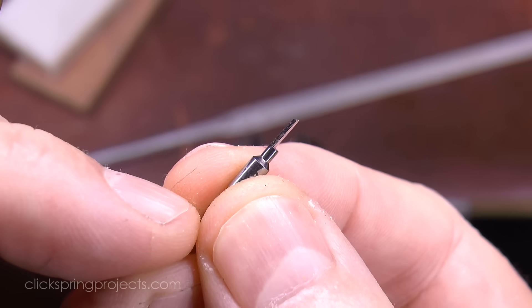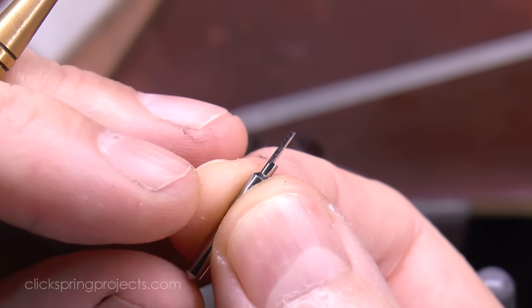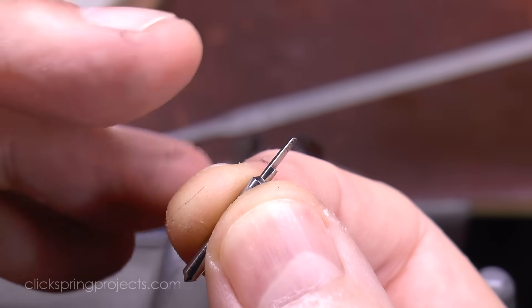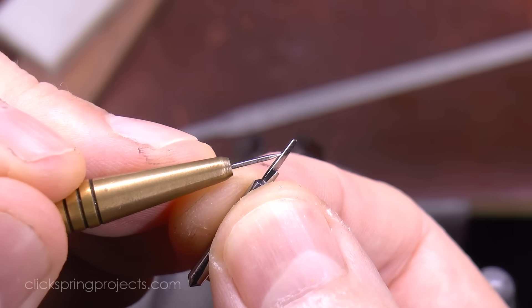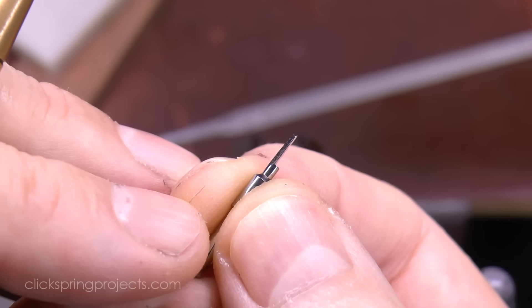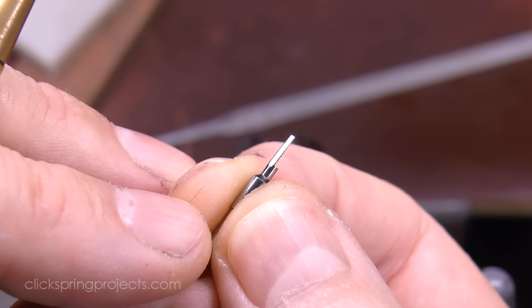You'll have noticed that these commercial reamers have a relief behind the cutting edge as well as a small land between the two. That's actually a small remnant of the initial tapered profile, carefully preserved to remain as part of the geometry of the final cutter.